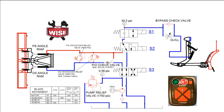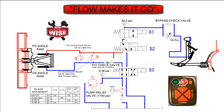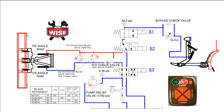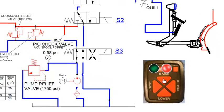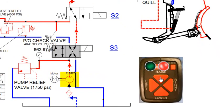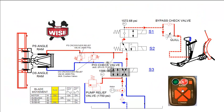For anything to move in a hydraulic system, it must first be supplied with flow. Cylinders can only extend or retract if flow is present. Hence the term, flow makes it go. In a hydraulic system, the flow is generated by the pump. We will demonstrate this using the hydraulic schematic of a straight blade plow. Pushing the raise button on the control activates the motor, which turns the pump and generates flow, which is indicated by moving lines and arrows on the hydraulic schematic.